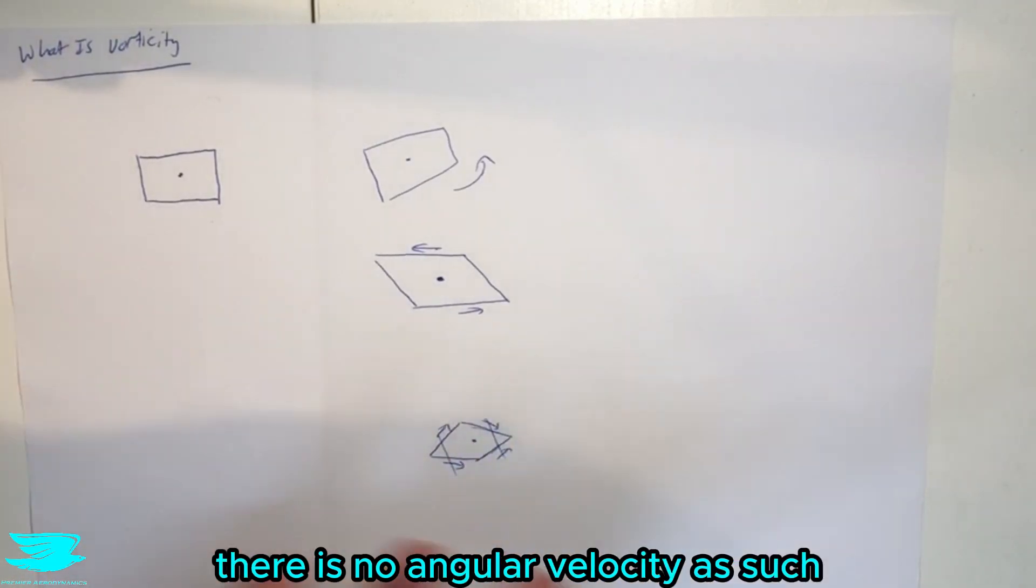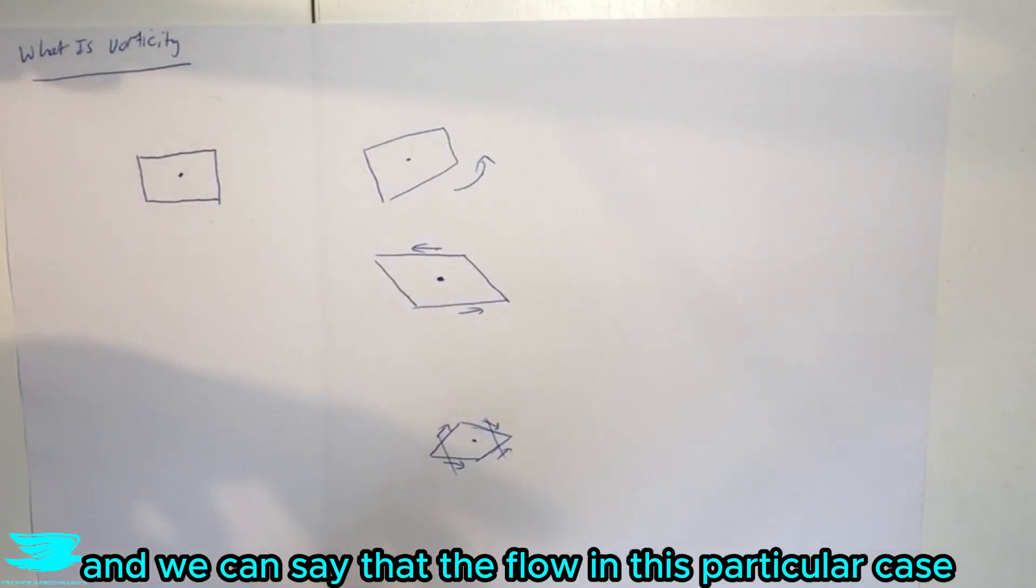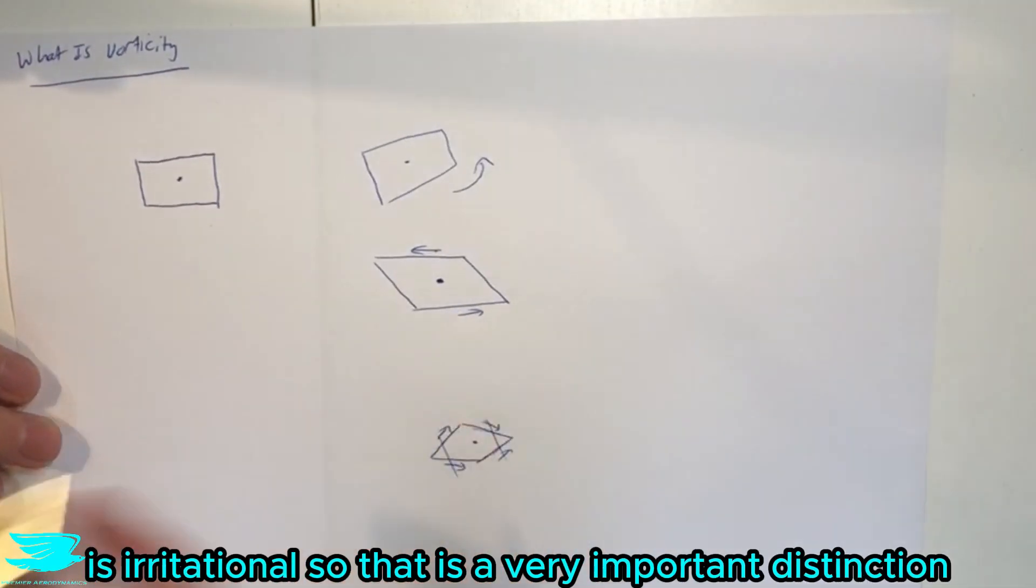So in this particular case there is no angular velocity, as such there is no vorticity, and we can say that the flow in this particular case is irrotational.